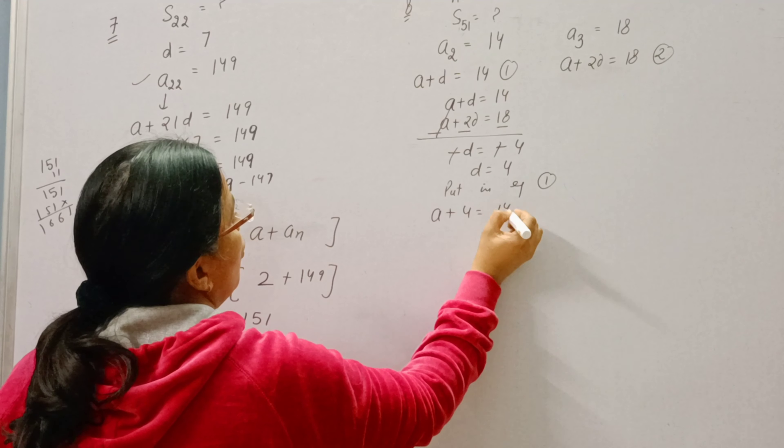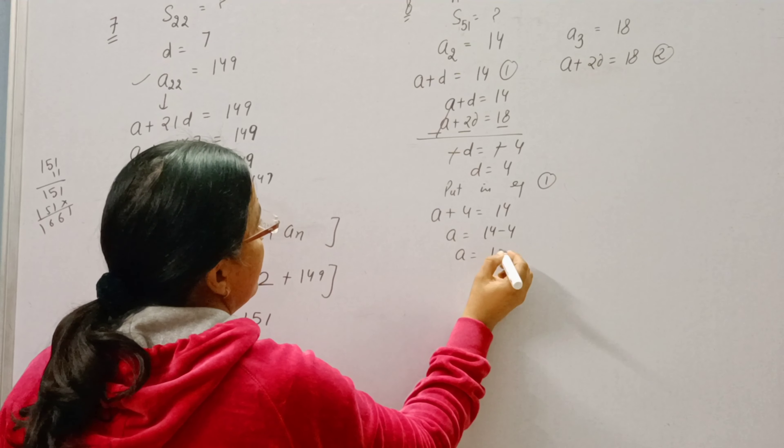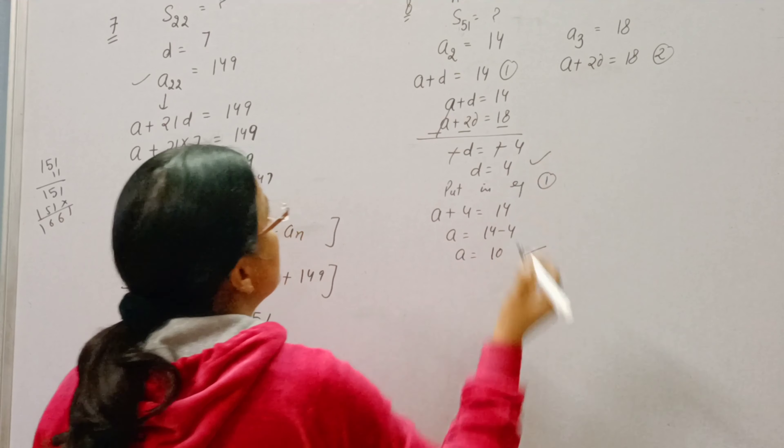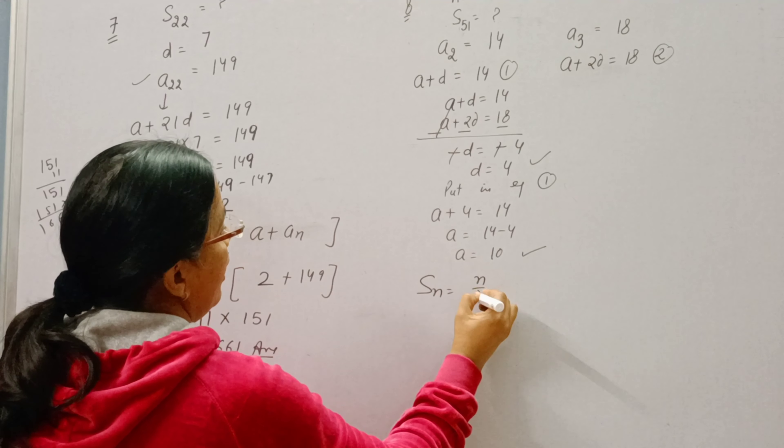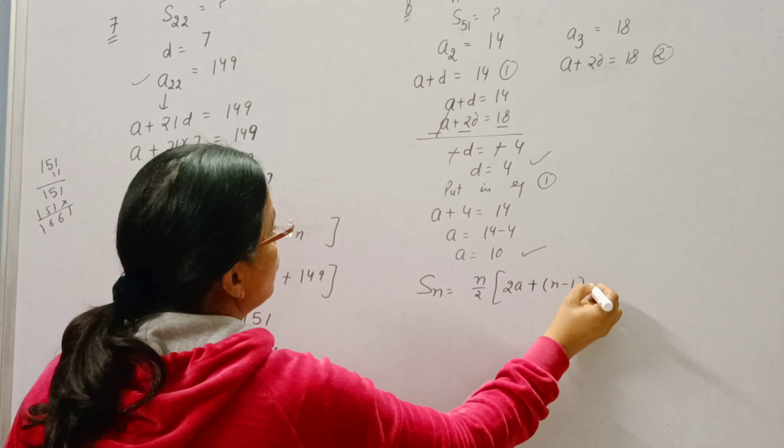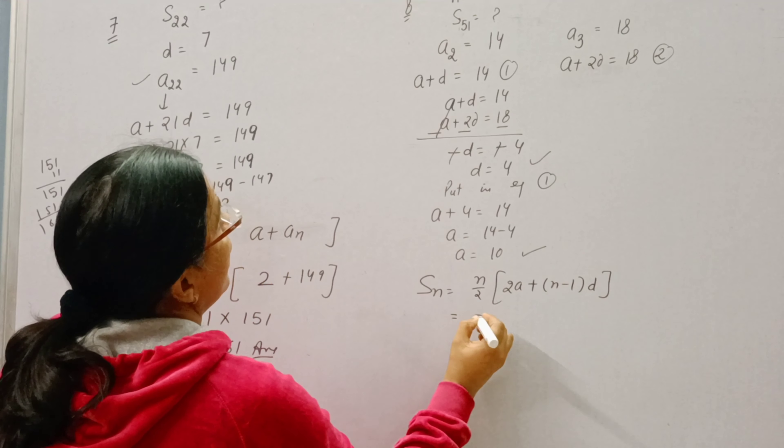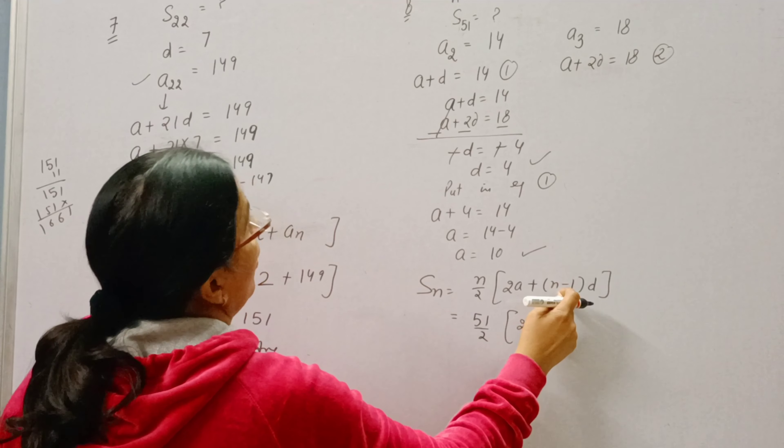Now A is known, D is known, so we can apply the formula of SN: N by 2 into 2A plus N minus 1 D. Here N is 51, A is 10.